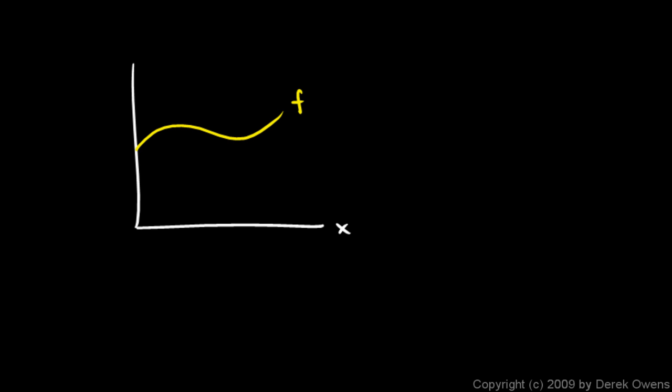If we have some function f here, a function of x, imagine a vertical line at some x value. This line starts at x equals 0 and moves to the right, sweeping across an area. We're concerned with the area bounded on the left and right by two x values — in this case 0 and x — and bounded on the top and bottom by the x-axis and the graph of f. We refer to this shaded region as the area under the graph of f.